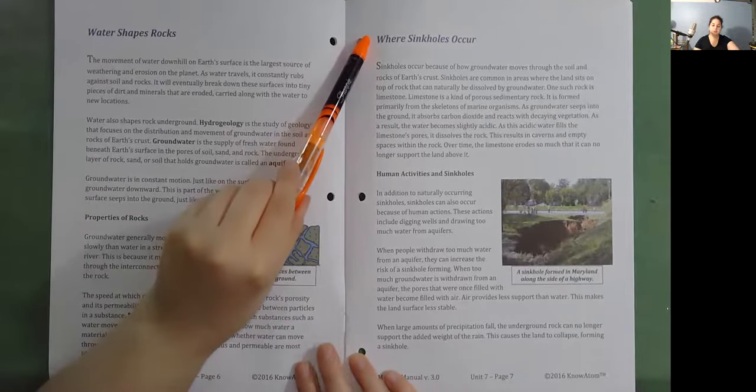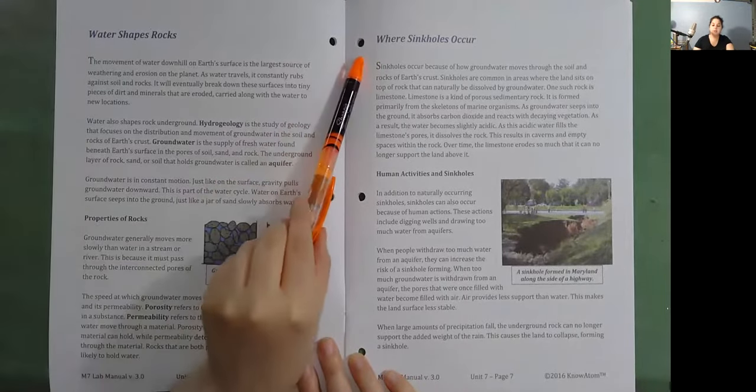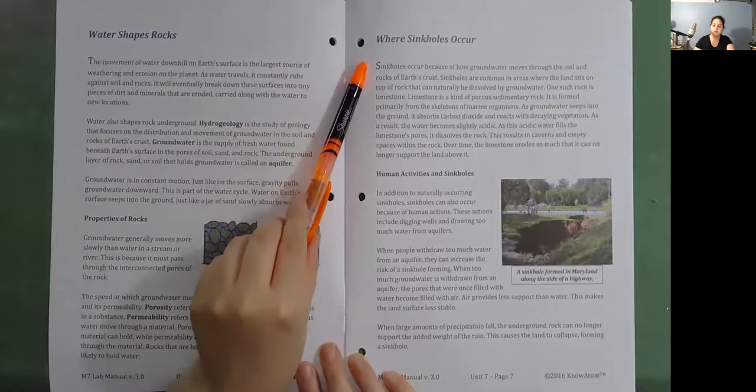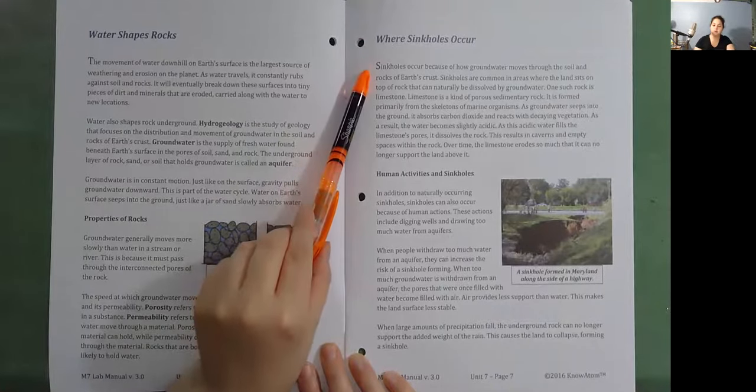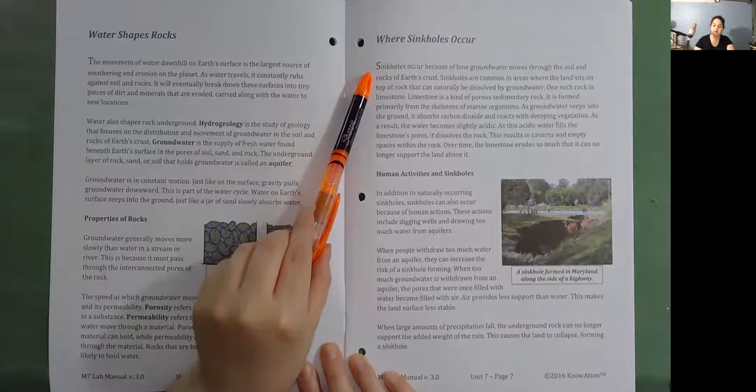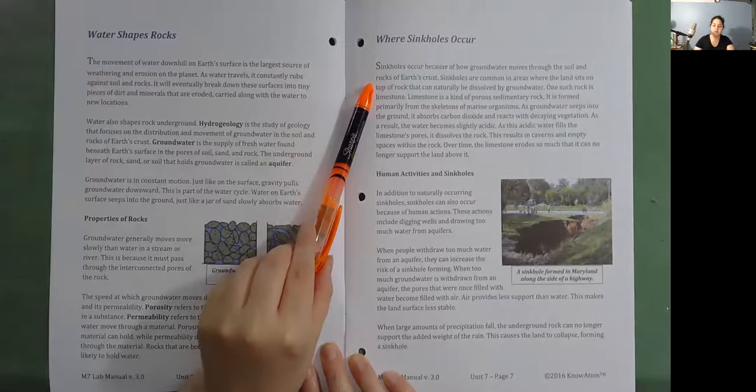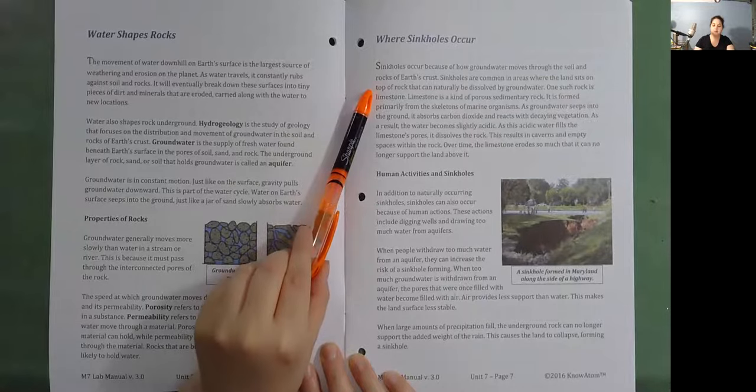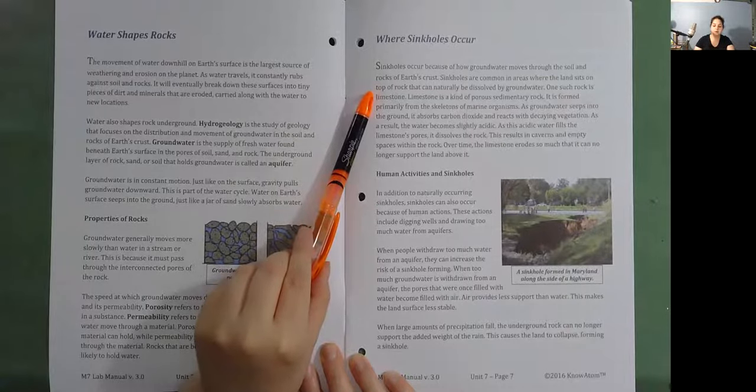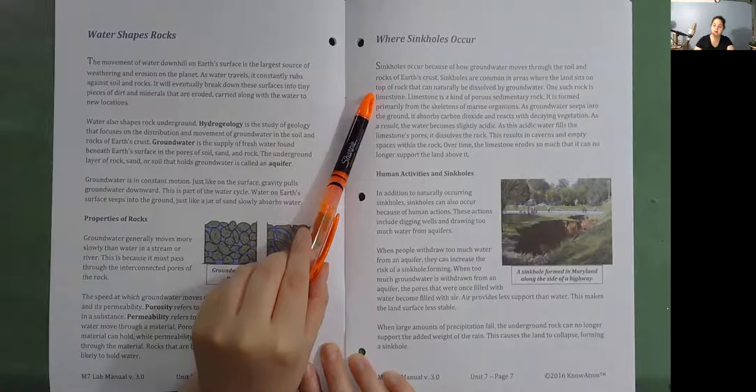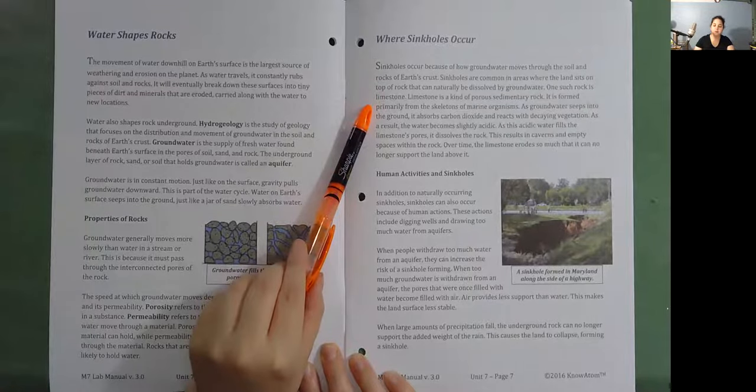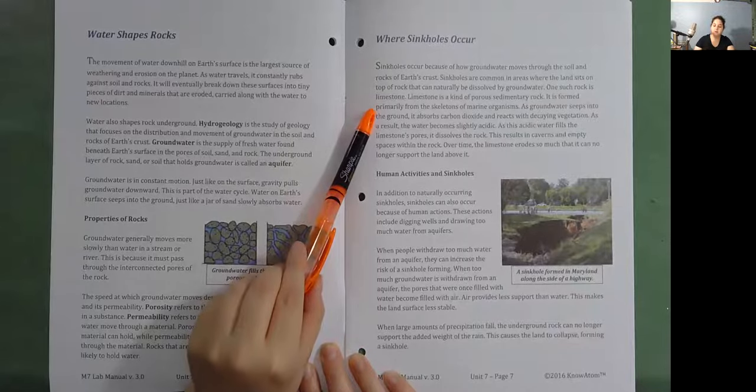Groundwater fills the spaces between porous rock underground. Where sinkholes occur. Sinkholes occur because of how groundwater moves through the soil and rocks on Earth's crust. Sinkholes are common in areas where the land sits on top of rock they can naturally be dissolved by groundwater. One such rock is limestone. Limestone is a kind of porous sedimentary rock. It is formed primarily from the skeletons of marine organisms.